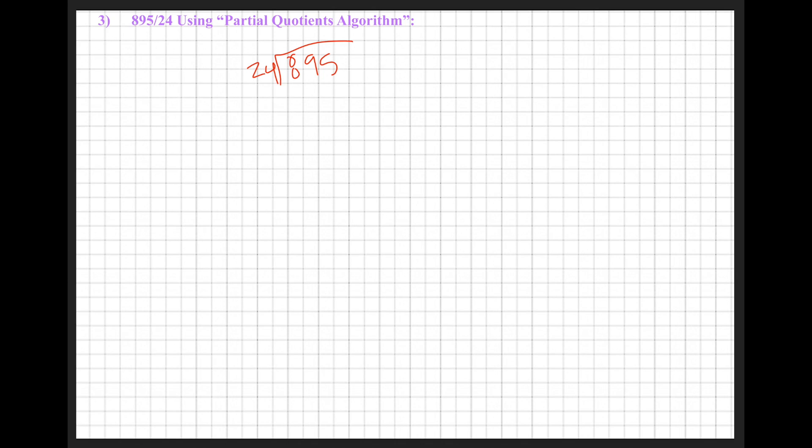What partial quotients is doing is using multiples that we already know to break down this number. In this case, we're looking for how many groups of 24 can go into 895. So I'm going to do multiples of 24 that I'm familiar with.